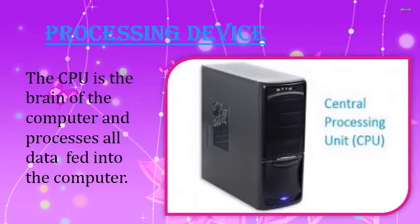Processing Device: The CPU is the brain of the computer and processes all data fed into the computer. Central Processing Unit — C means Central, P means Processing, and U means Unit. The CPU is also called the brain of the computer, and it is the processing device that helps us get our output.